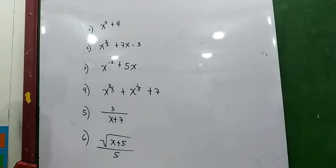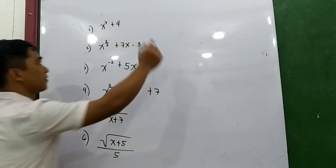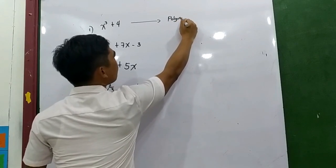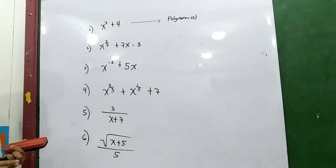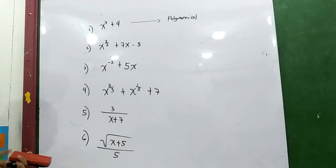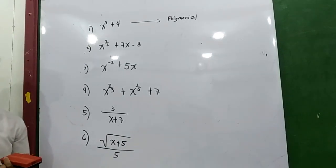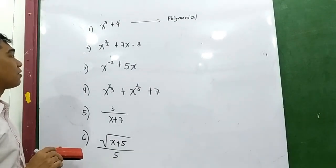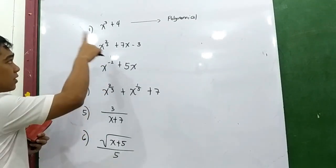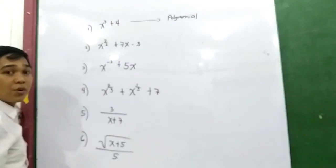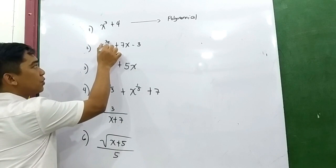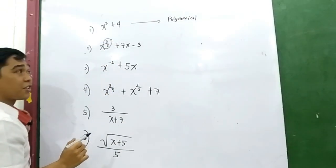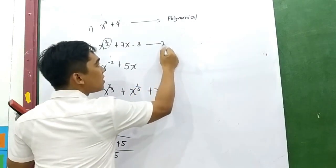Let's define whether the given examples are polynomials or not. Number 1: x cubed plus 4 — is it a polynomial or not? It is a polynomial. Why? Because we don't have a negative exponent, we don't have a radical sign containing a variable, and we don't have a positive exponent in the denominator. Number 2: x raised to 3 over 2 — the exponent is in fraction form, so this is not a polynomial.